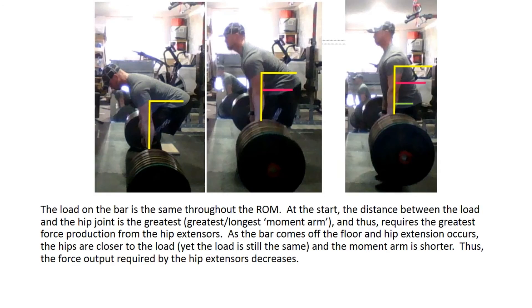Let's look at the deadlift as a practical application. The load on the bar stays the same throughout the range of motion. At the start, the distance between the load and the hip joint — the axis of rotation I'm focusing on — is greatest, as shown by the horizontal yellow line. This represents the longest moment arm, so the force required by the hip extensors is very high. As the bar comes off the floor in position two, the hips move closer to the bar due to some hip extension, giving a shorter moment arm.